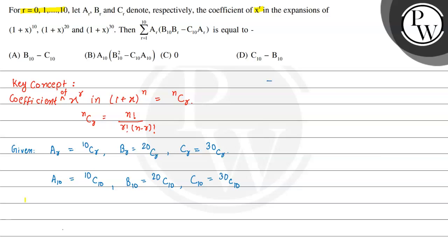We have been given summation of ar multiplied by (b10·br minus c10·ar), where r is varying from 1 to 10. So here we get summation of ar·br·b10 minus c10·ar, the whole expression.